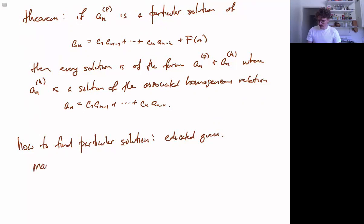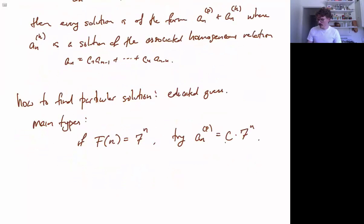So the two main types that we can deal with are if f of n is an exponential function, so something like 7 to the n, then our particular solution will be the same exponential function, but multiplied by some constant that we have to determine. So for your particular solution, you will try something like constant times 7 to the n. And then you will have to figure out what this constant is. You can't just take any constant. It is not any real number. You will have to figure out how to find a number that works. So we'll see an example of that in just a second. Although I think we'll give an example for this second type, if I remember correctly.